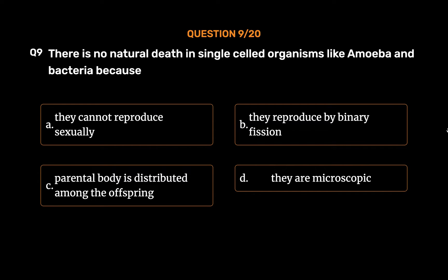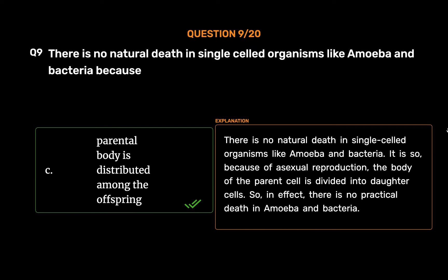The correct answer is Option C: Parental body is distributed among the offspring. There is no natural death in single-celled organisms like amoeba and bacteria because of asexual reproduction — the body of the parent cell is divided into daughter cells. So, in effect, there is no practical death in amoeba and bacteria.